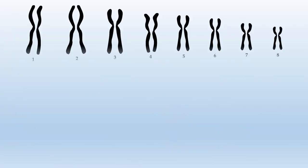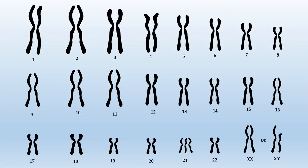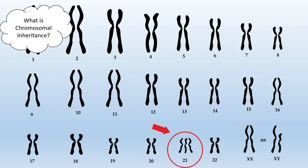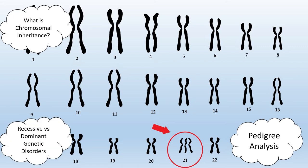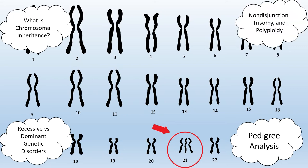While genetic heterochromia is a visually striking condition, it is hardly the most severe genetic disorder that can be transmitted via chromosomes. Genetic disorders of all kinds can be inherited on chromosomes you get from your parents. Some of these disorders are caused by mutated alleles in specific genes, while others are caused by a disruption in the distribution of chromosomes during meiosis.